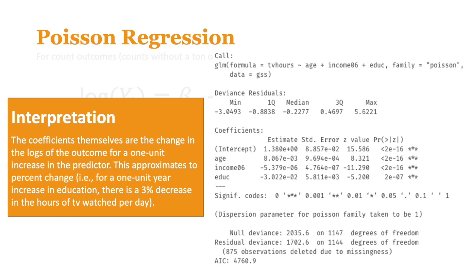With this output, we can look at the interpretation of the coefficients. The coefficients are the change in the log of the outcome for a one-unit increase in the predictor. Just like log-lin models, this approximates to a percent change. For a one-unit year increase in education, there is a 3% decrease in the hours of TV watched per day. If you look at the education coefficient, it's -0.03; multiply by 100 and you get 3. A similar approach can be done for age and income.